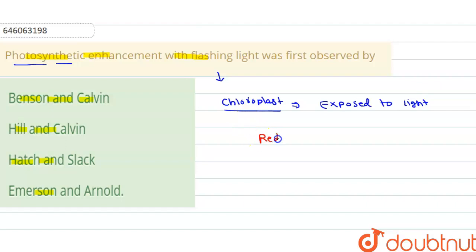When chloroplasts are exposed to red light or far red light, the rate of photosynthesis will be increased.